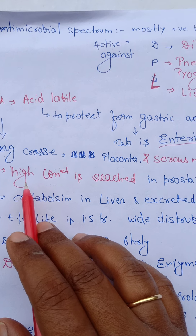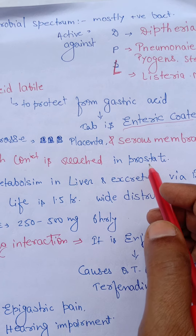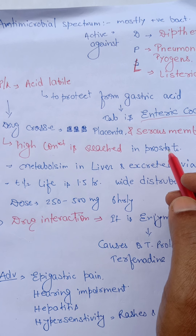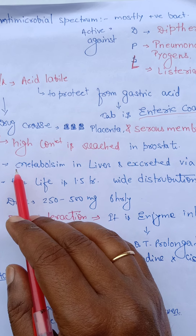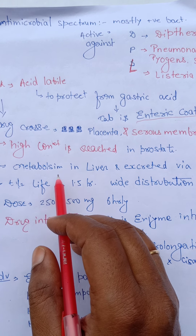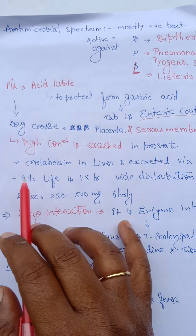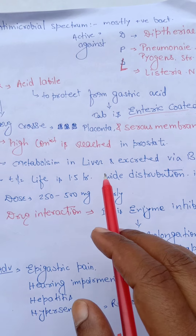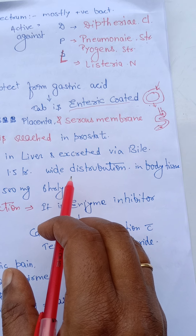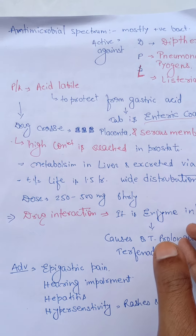Once absorbed, high concentration is reached in the prostate. The erythromycin concentration is very much increased in prostate tissue. This drug is metabolized in the liver and excreted via the bile. The half-life of erythromycin is 1.5 hours, and the drug is very widely distributed in whole body tissues.